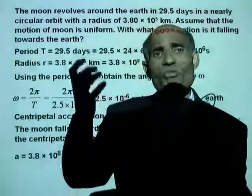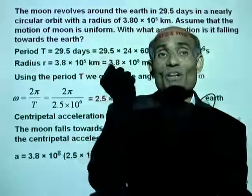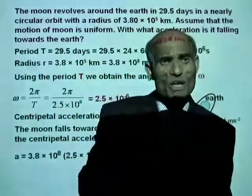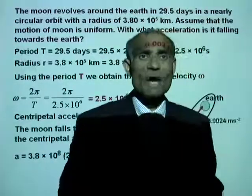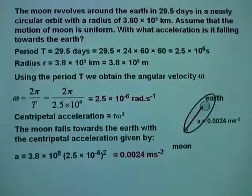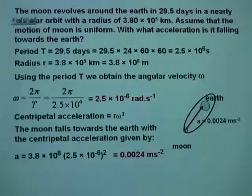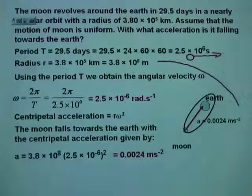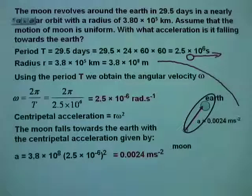The Moon is falling towards the Earth with this acceleration. Why doesn't it fall down to the Earth? Why does it keep going around in a circle? The Moon has two types of motion: it has a linear motion and a motion towards the Earth.